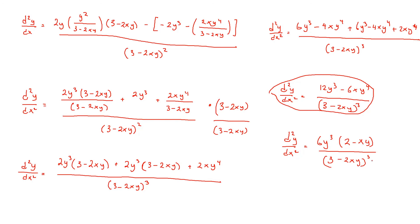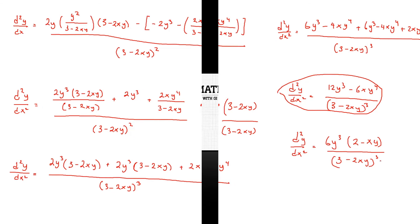To summarize: what you need to do is first find the first derivative using implicit differentiation. Then find the second derivative the same way. Once you have dy/dx — which is your first derivative — substitute it in wherever dy/dx appears and simplify. That result will be your second derivative.